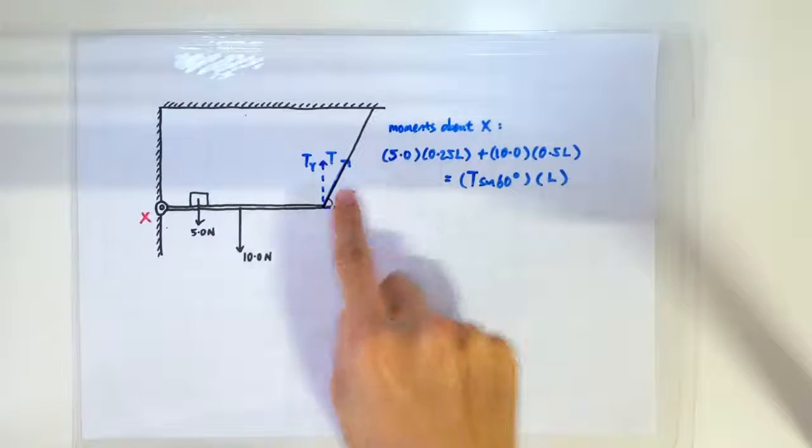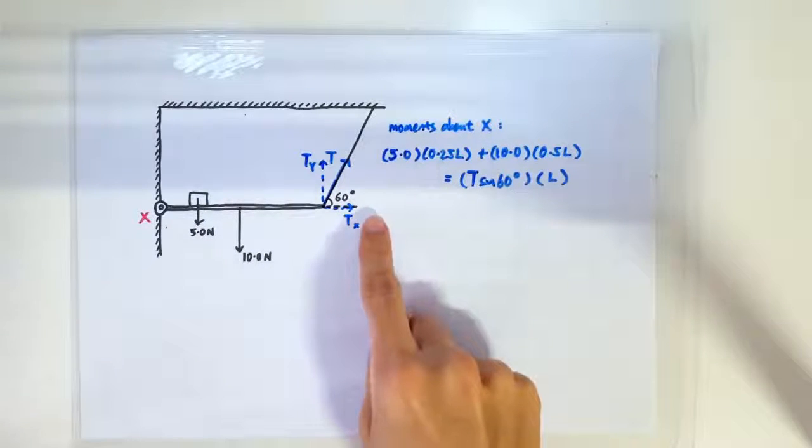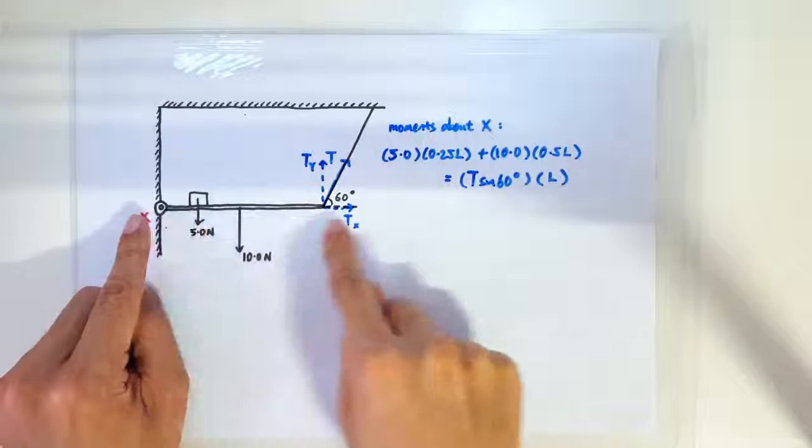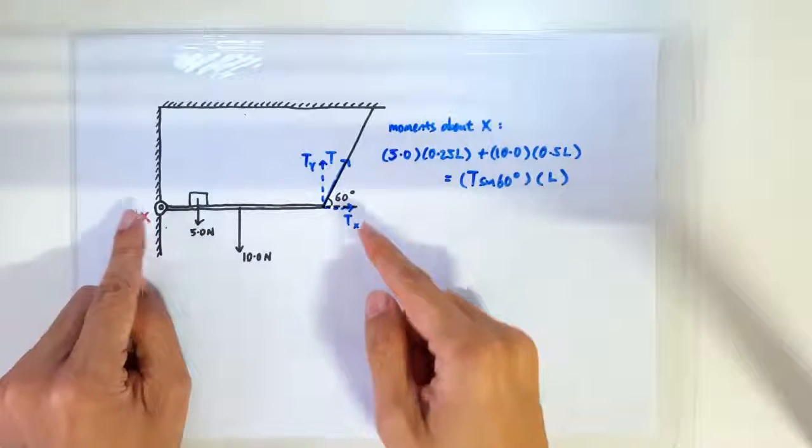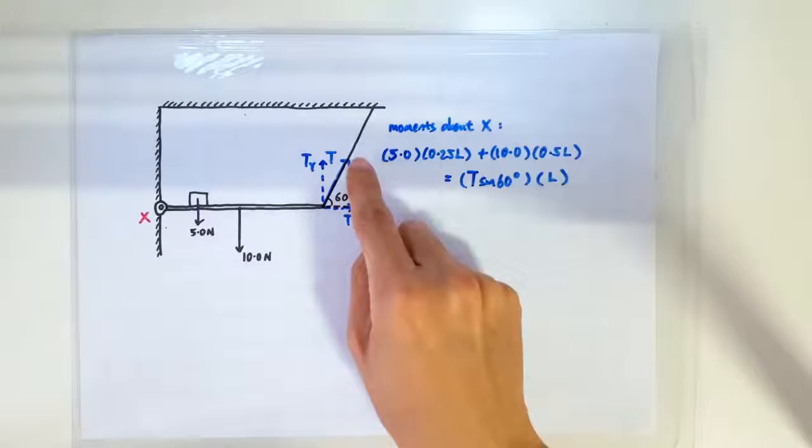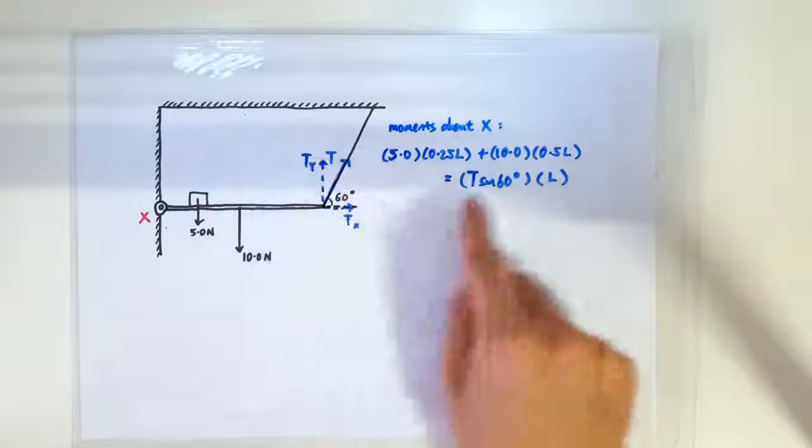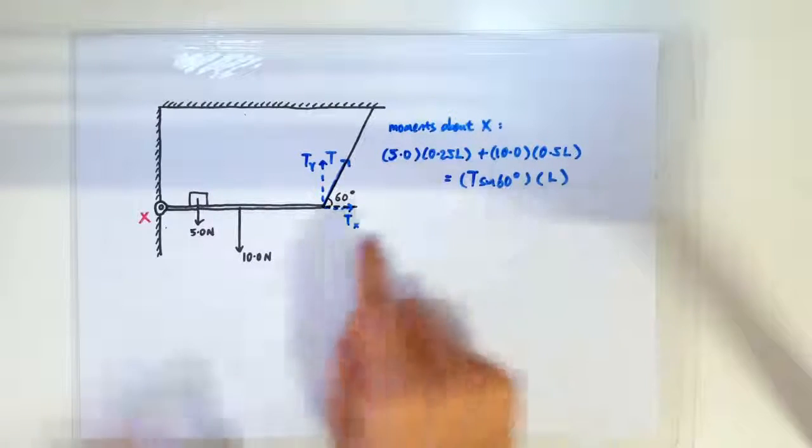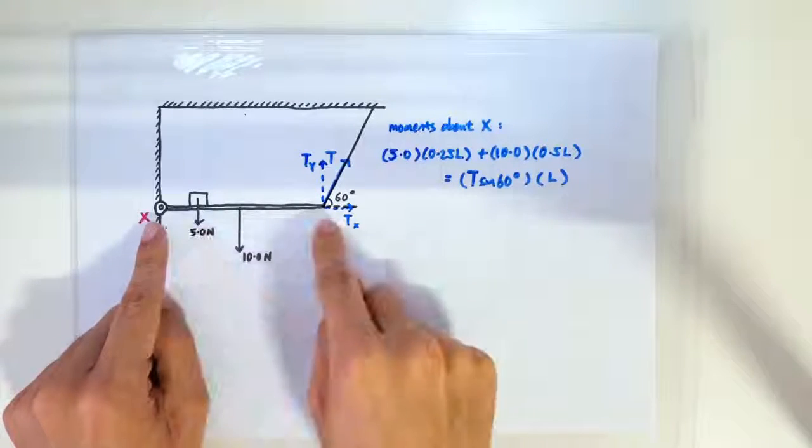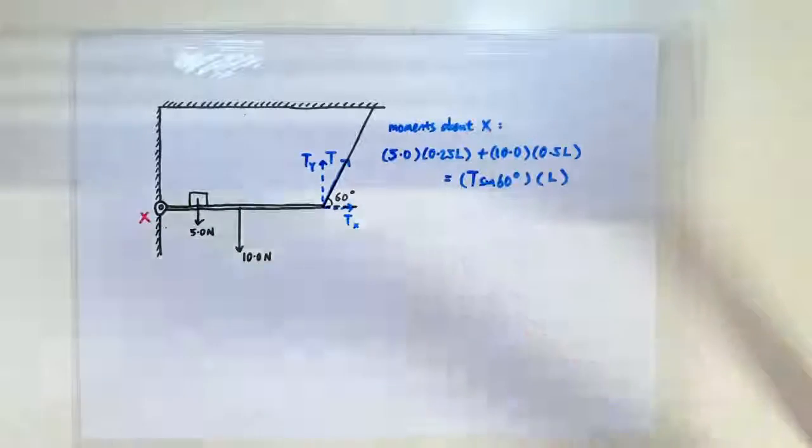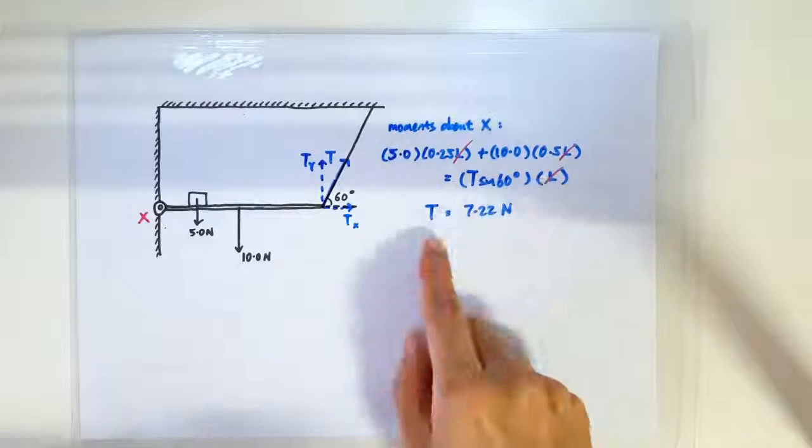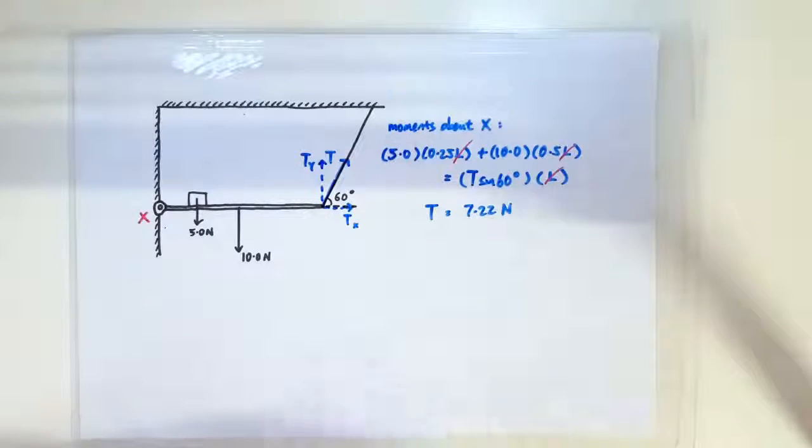So these clockwise moments must be balanced by the anticlockwise moments exerted by the tension T. If we resolve the tension into its vertical and horizontal components, then we realize that the horizontal component exerts no moment. So the moment exerted by T can simply be written as T sin 60 degrees, which is the vertical component, times the perpendicular distance, which is the length of the rod L. So with just one equation, we solved T to be 7.22 newtons.